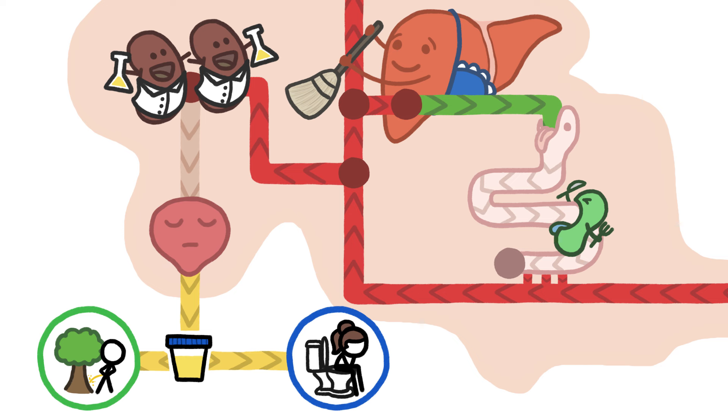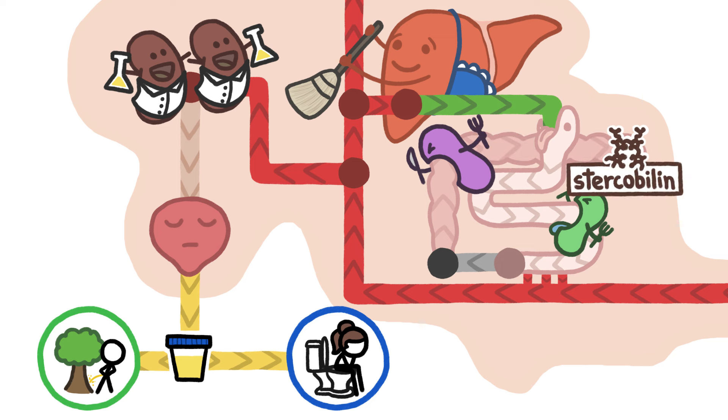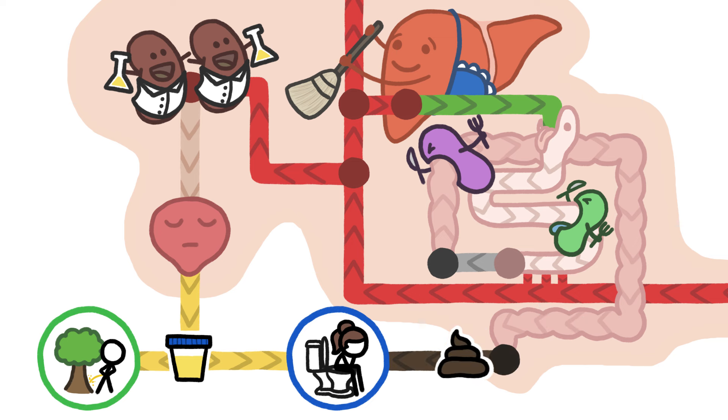In route number two, microbes back in the intestines happen upon the urobilinogen and chew it into a dark brown molecule that lurches all the way to the end of the colon, mixing with the grayish remains of our food to turn the final product its familiar shade.